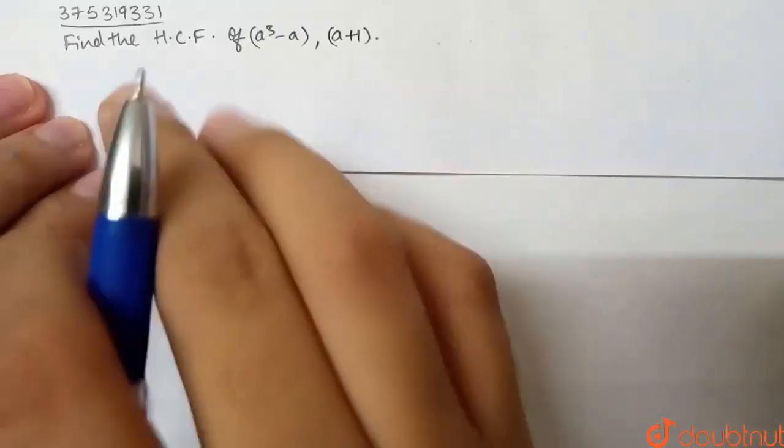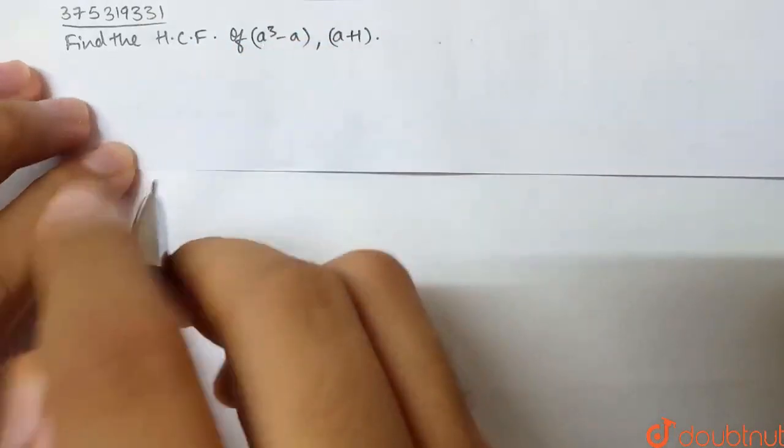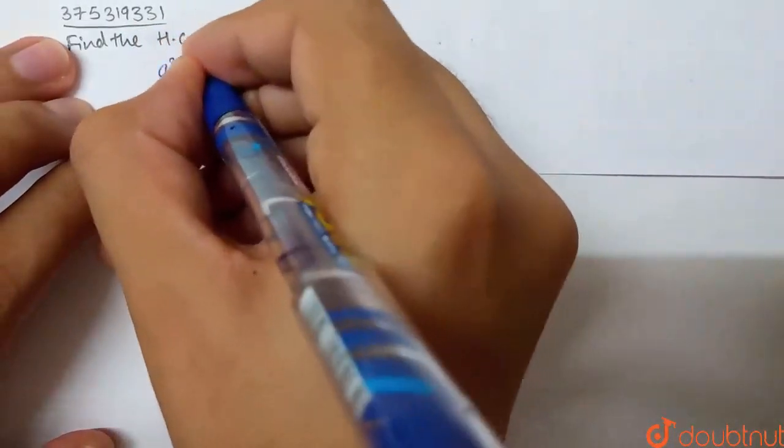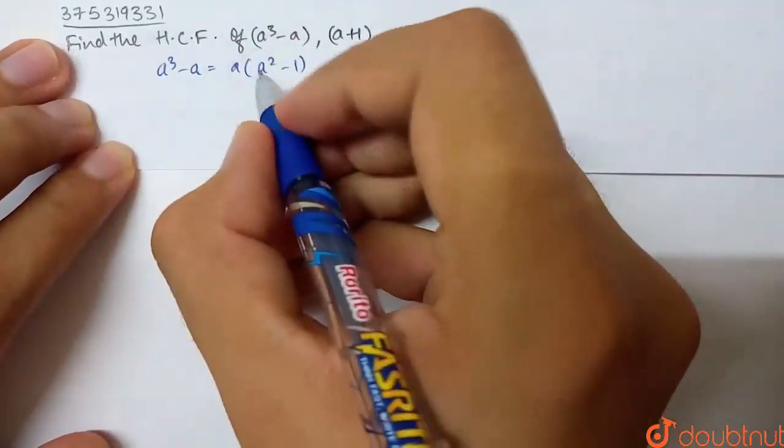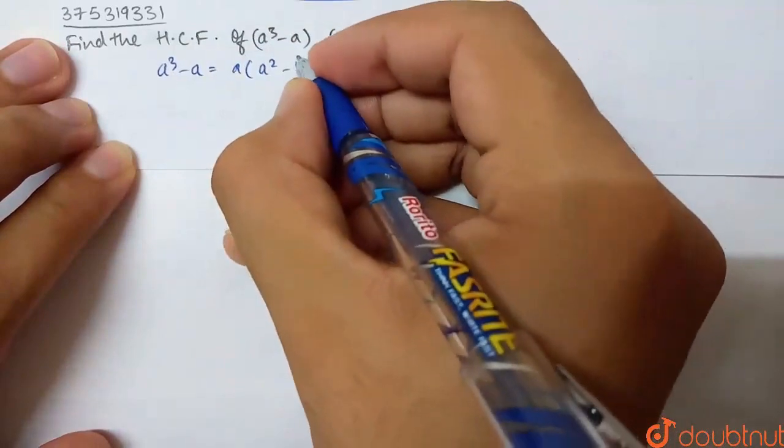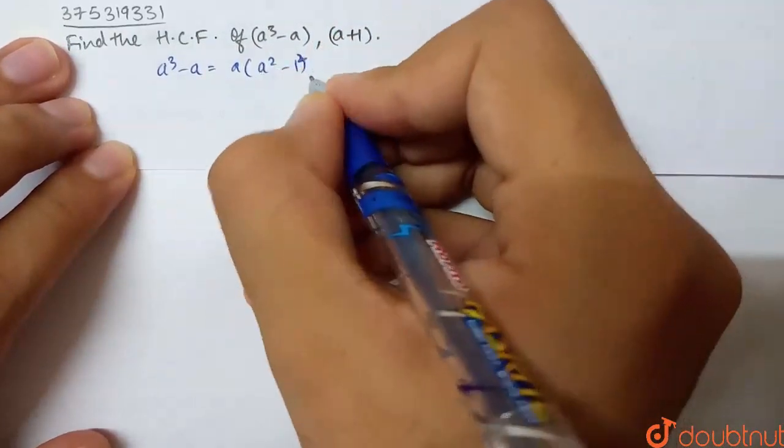This question is to find the HCF of a³-a and (a+1). HCF is taken out. So, a³-a basically has a into a²-1. And what is a²-1? That is a-b into a+b, because you can write 1 as a², if you use a²-b² formula.